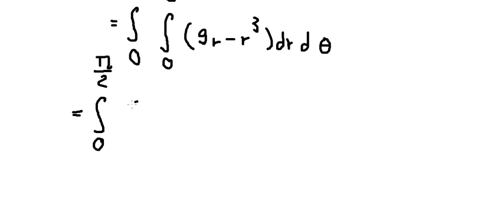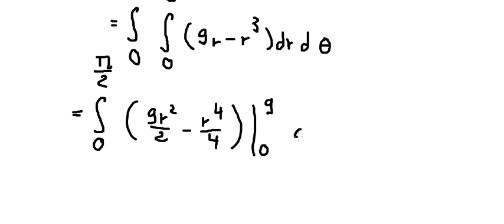We have nine r squared over two, this one we have r to the power of four over four, and we put the bounds from zero to number nine. So number nine I will put in here, number zero I will put in here.